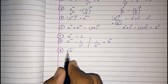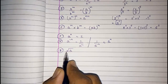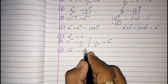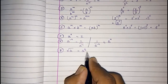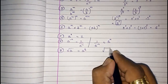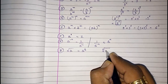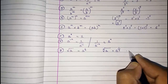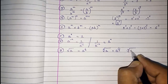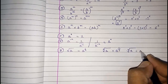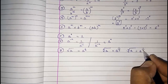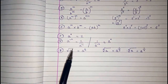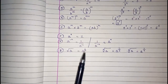The last law involves roots. To remove a root, we write it as a fractional power. A square root means a raised to 1 by 2. A cube root means a raised to 1 by 3. A fourth root means a raised to 1 by 4.